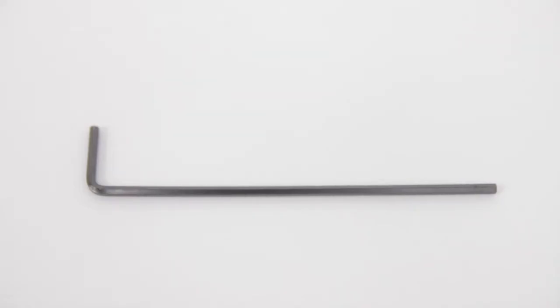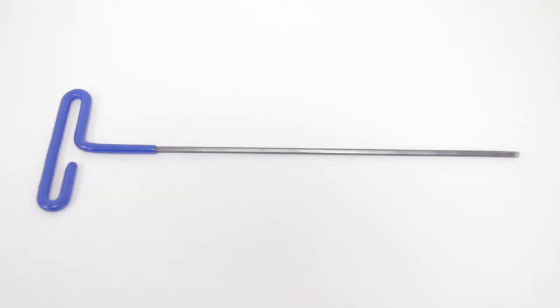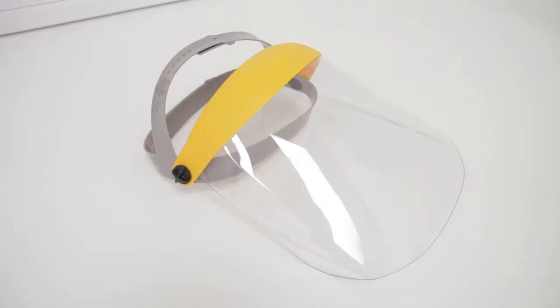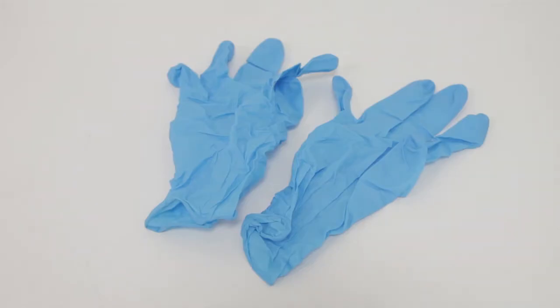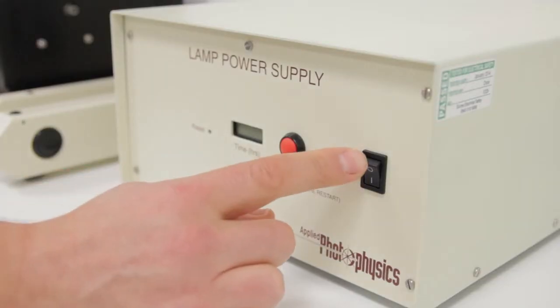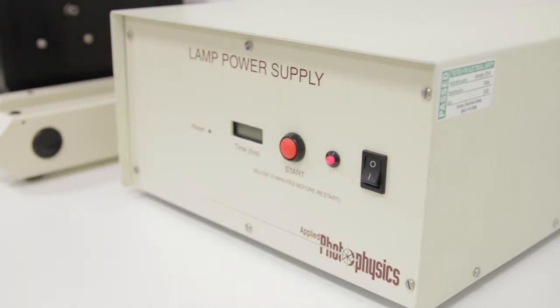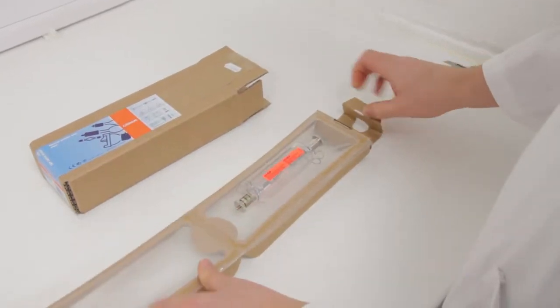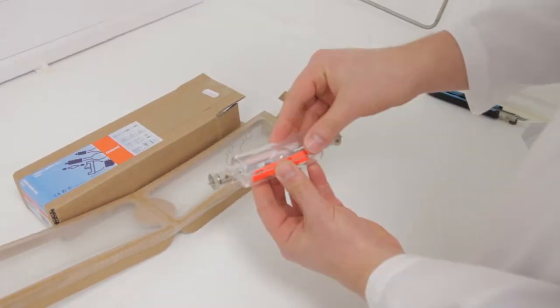Step one, preparation. To replace your lamp, you will need a regular three millimeter allen key or hexagon wrench, a four millimeter insulated allen key, and sufficient personal protective equipment, i.e. a face visor and nitrile gloves. Switch off the lamp power supply and allow 30 minutes for the lamp to cool down. Unbox your new lamp and separate the protective safety shield into its two halves.